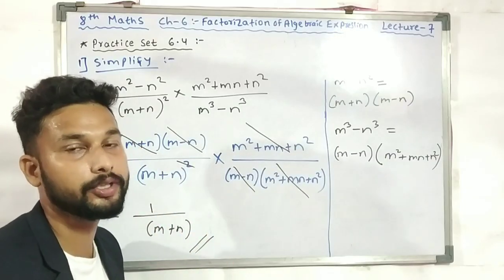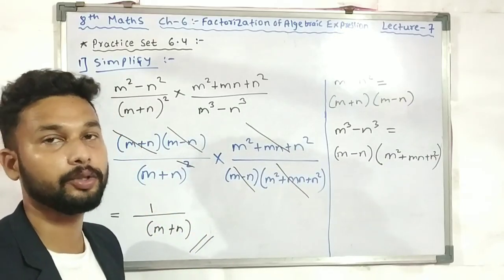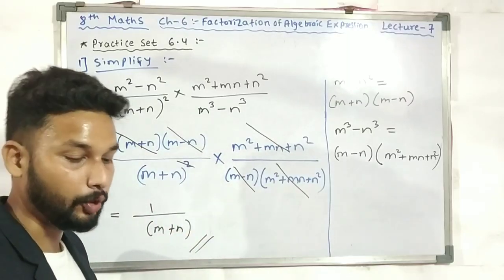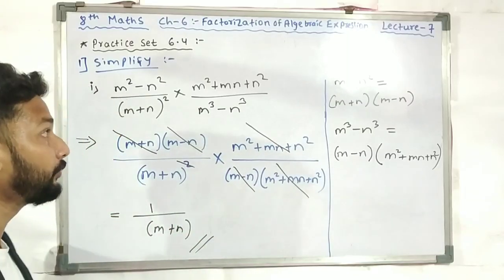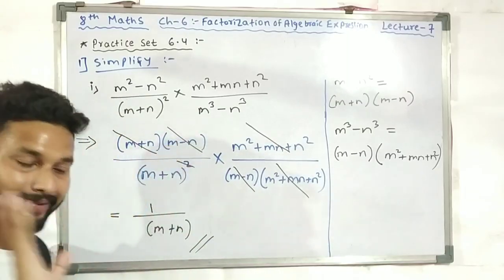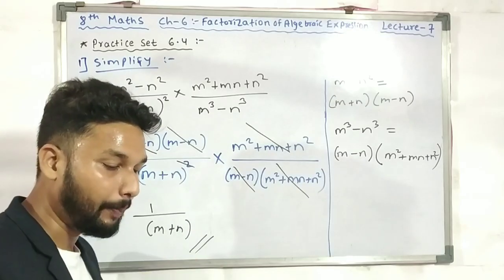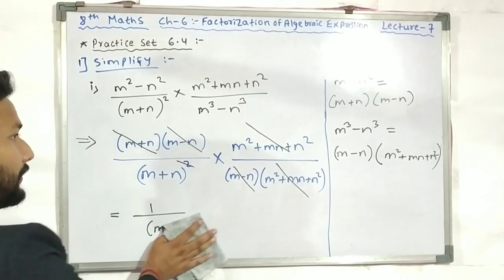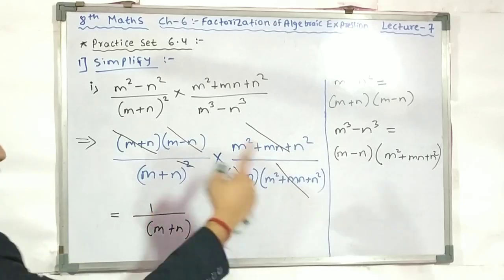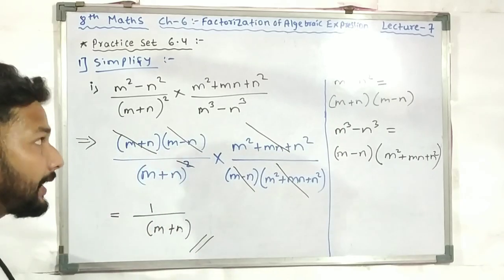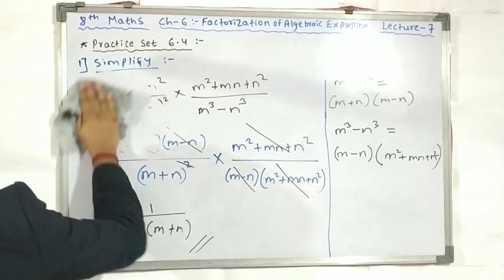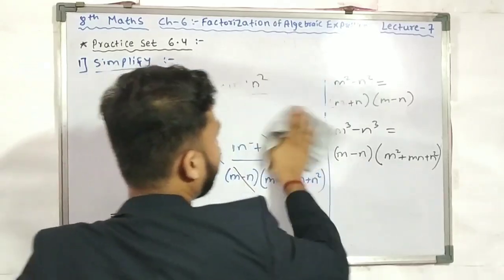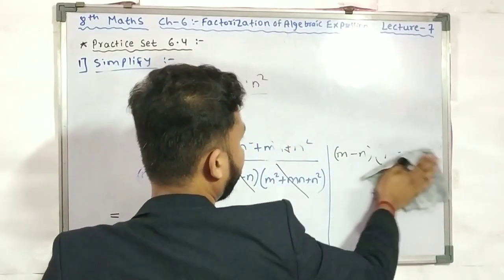So you must practice this type of example. This is my first example, Practice Set 6.4. I will do one more example. Again, this is about factors. Example number 2 — the remaining examples will be done. I hope you have understood this. Note it down. Let's go to the second example.